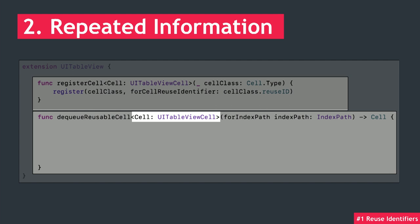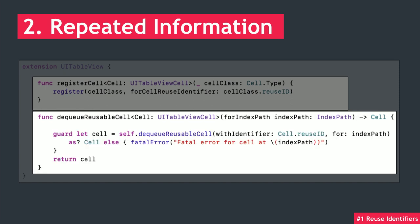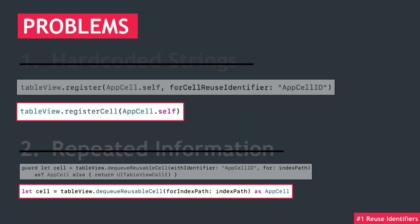And we can do a similar thing for dequeuing. We specify that we'll be using a generic cell and we'll return the generic type. In the body, we'll call the original dequeuing function, use our cell's reuse ID, and do that whole guard-let unwrapping dance there — and fatal error out, because you don't actually want to return an empty cell if you can't unwrap the one you want. And thus, we have transformed one of the more annoying bits of setting up our table views into simple one-liners. We've basically made every reuse identifier obsolete, minimized human errors, and simplified table view development across the whole app.